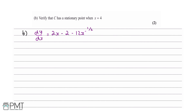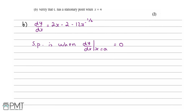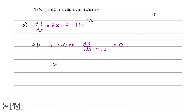Part B asks us to verify that C has a stationary point when x equals 4. A stationary point occurs when dy by dx at a certain x value equals 0. So we need to test whether dy by dx at x equals 4 is 0. Substituting: 2 times 4 minus 2 minus 12 times 4 to the minus 1 over 2. That gives 8 minus 2 minus 12 times 1 over root 4, which is 1 over 2, so minus 6. This equals 0.